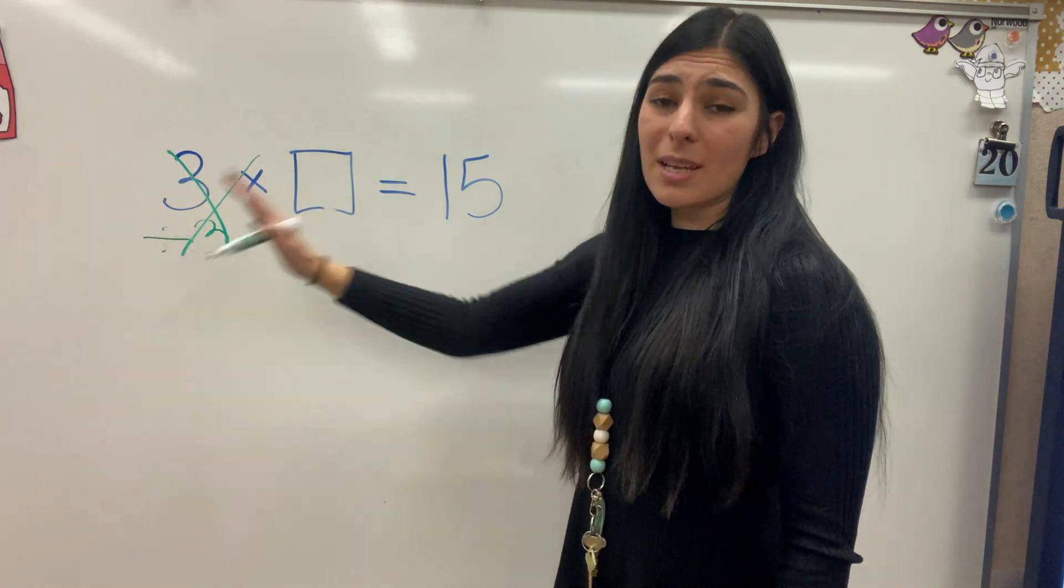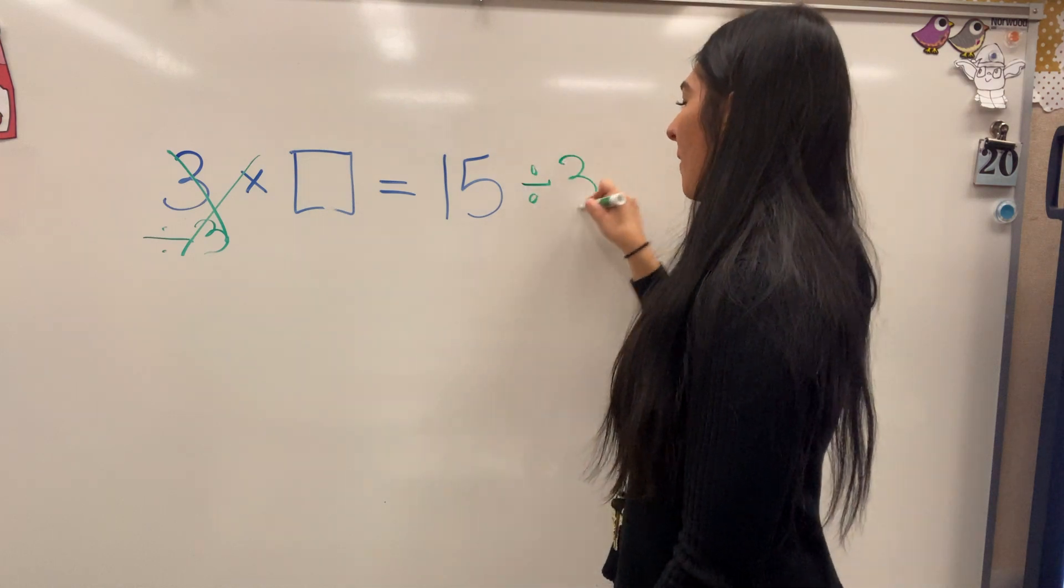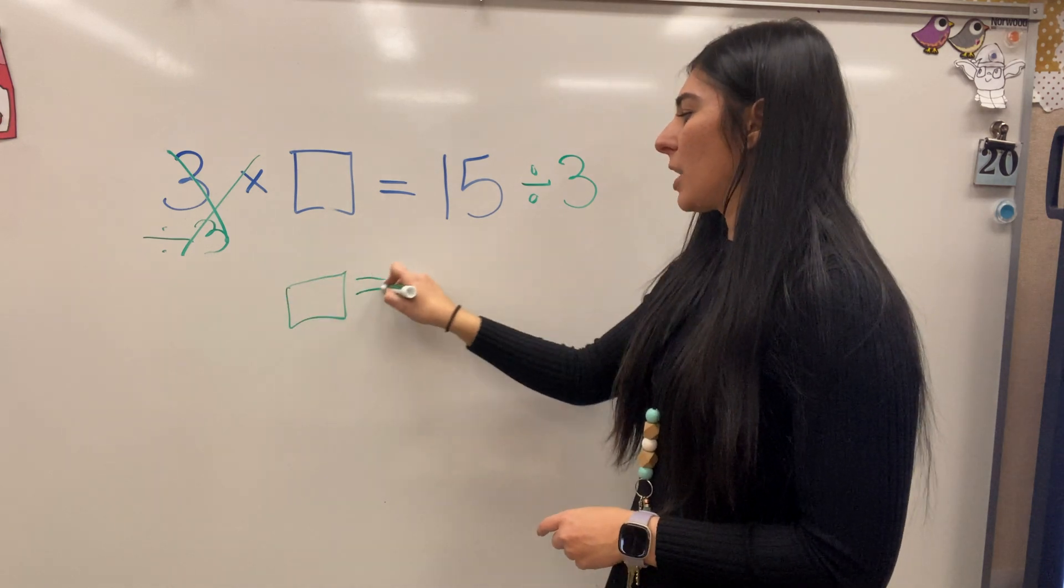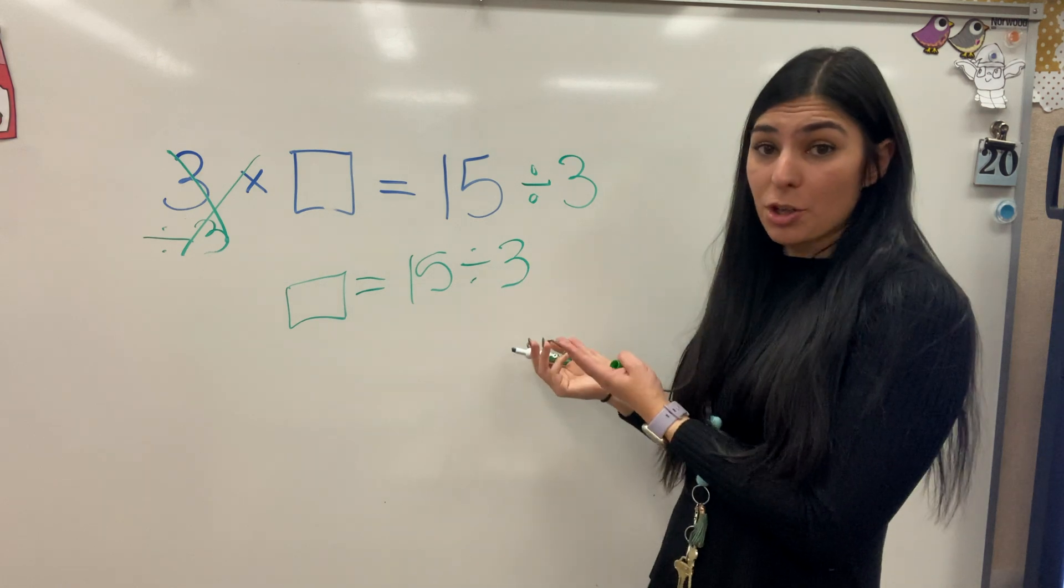But whatever I do to this side of the equal sign, I have to do to the other side. So I'm going to divide by 3. And that means our new equation is box equals 15 divided by 3. And there's our new equation.